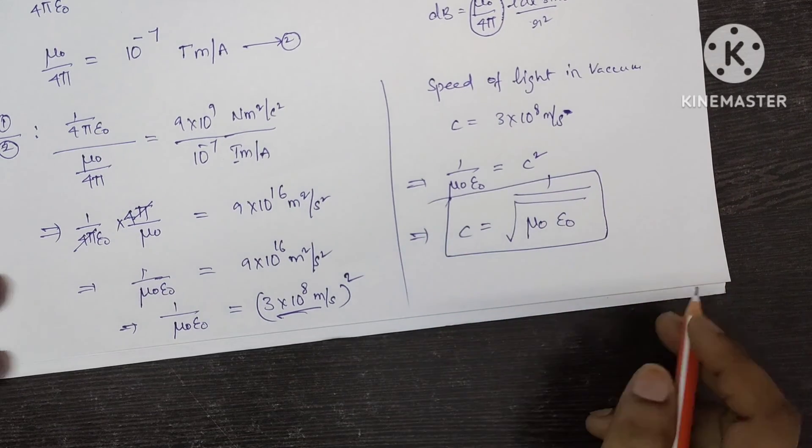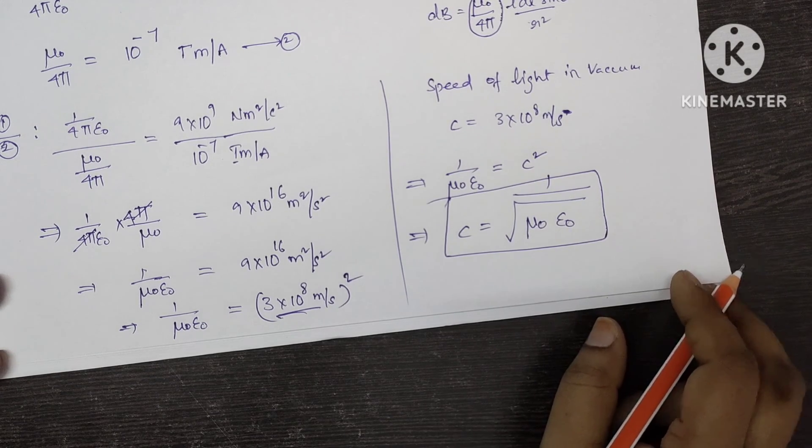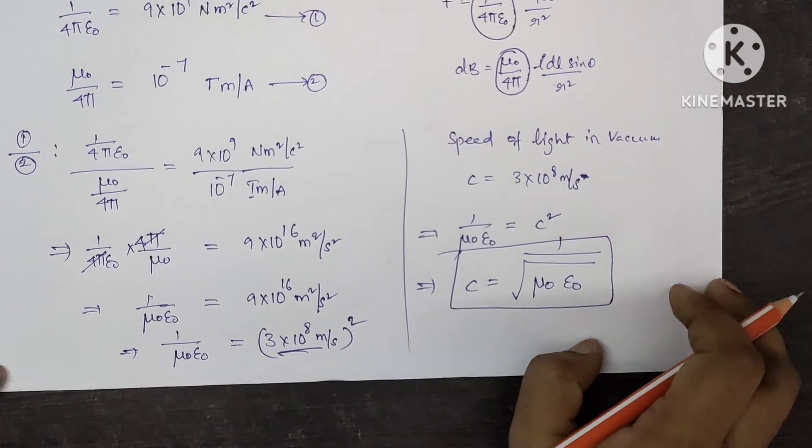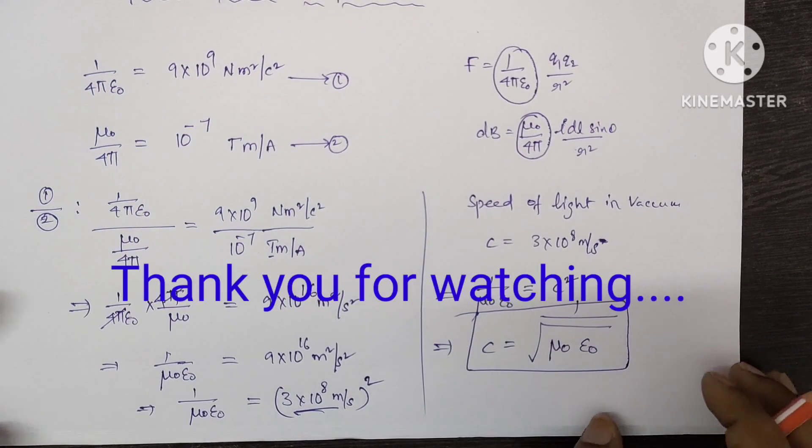That implies c equal to 1 by square root of mu 0 epsilon 0. This is the relation between speed of light and permittivity permeability. I hope it is clear to you. Please like the video, share with your friends and don't forget to subscribe the channel. Thank you for watching this video.